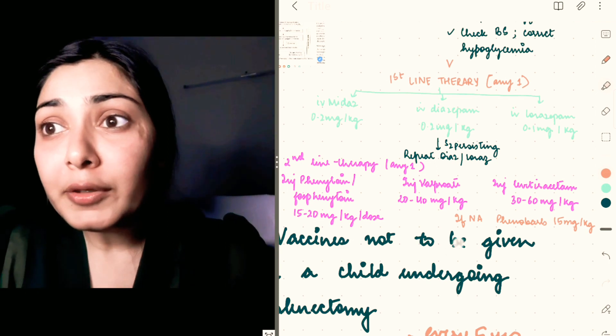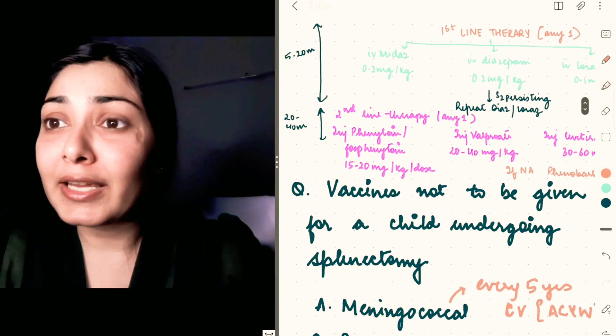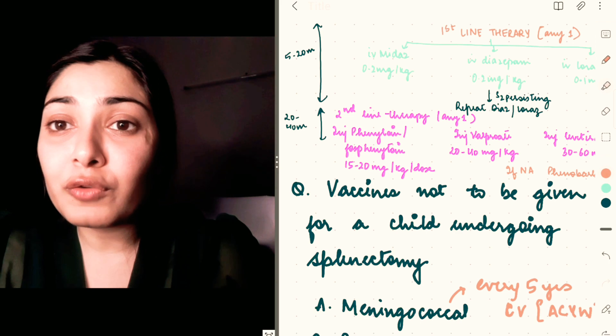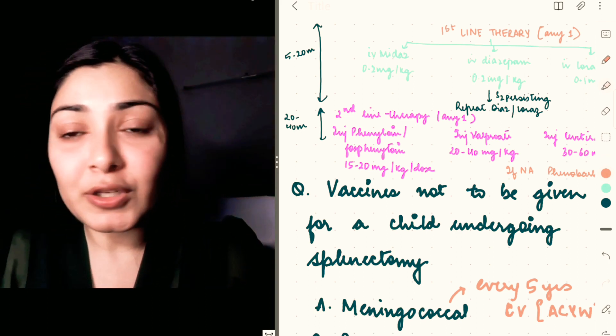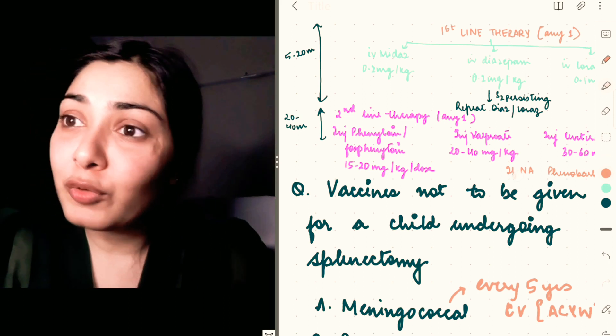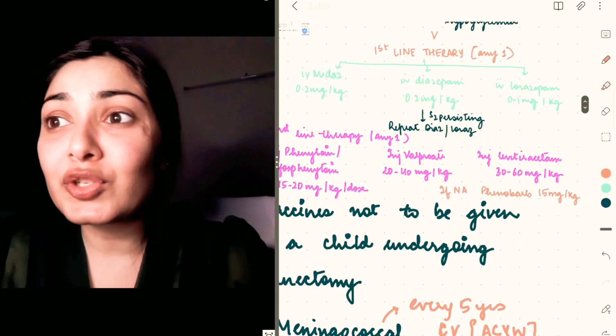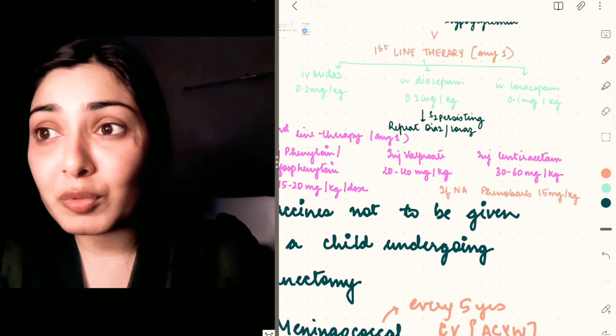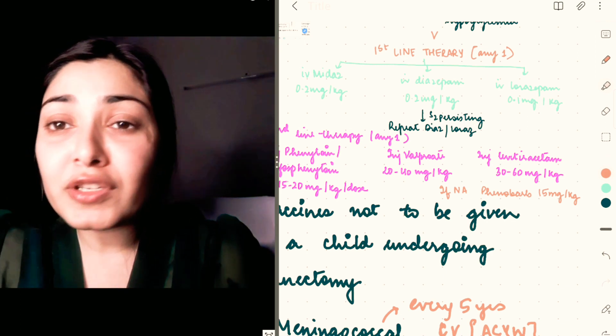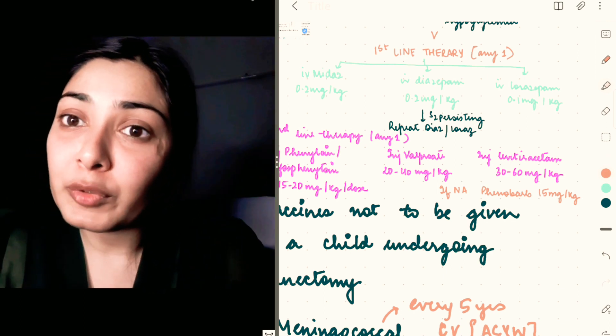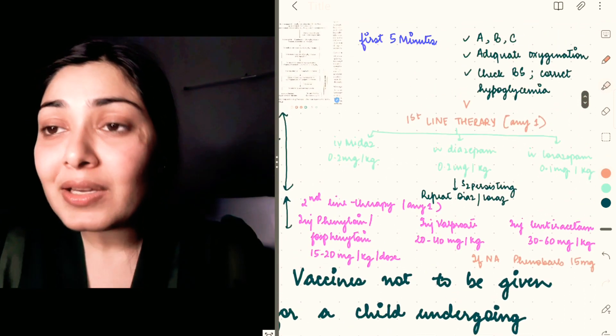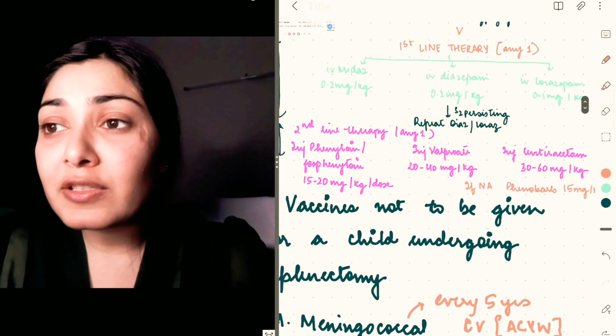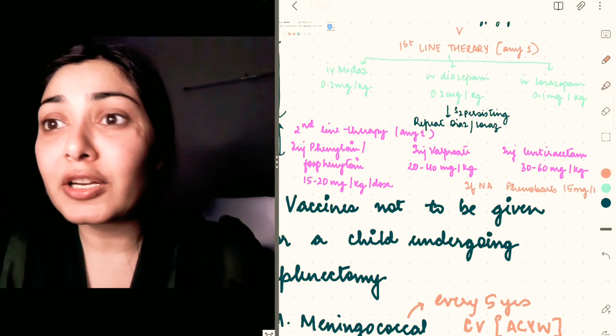Now coming to the second-line therapy, which includes phenytoin, fosphenytoin, valproate, and levetiracetam. We all know the doses: phenytoin 15 to 20 mg/kg, valproate 20 to 40 mg/kg, levetiracetam 30 to 60 mg/kg. And if any of these is not available, you use phenobarbital 15 mg/kg as loading dose.